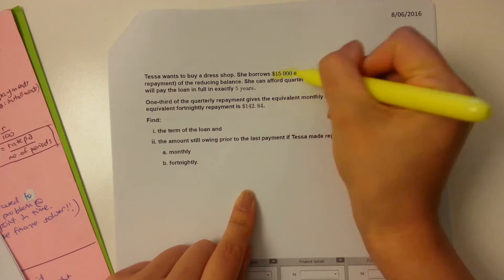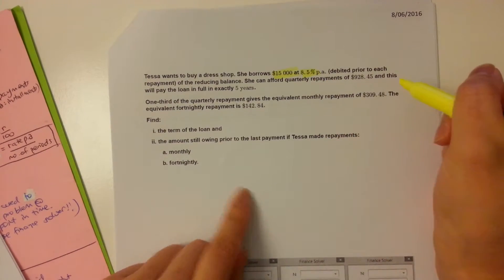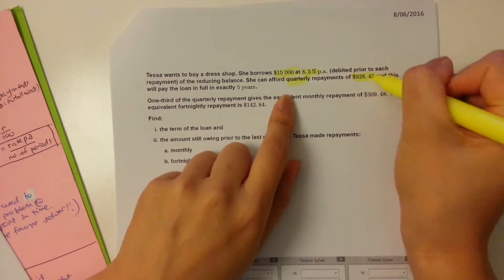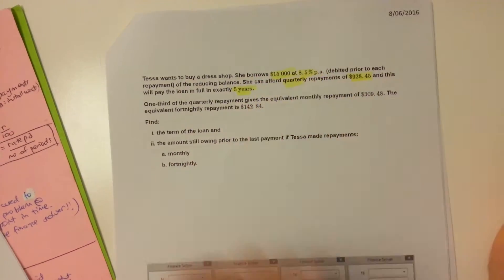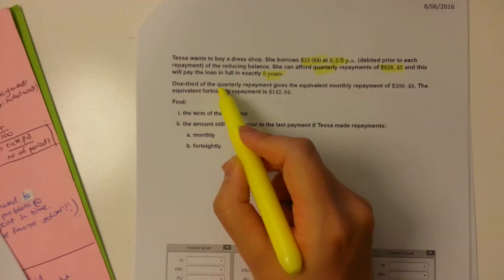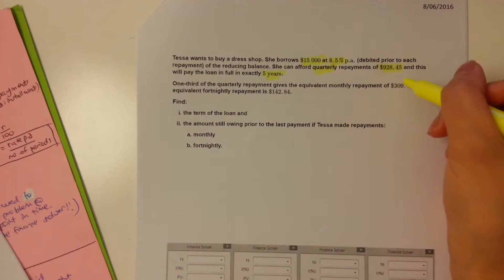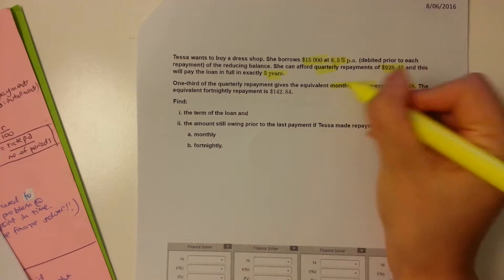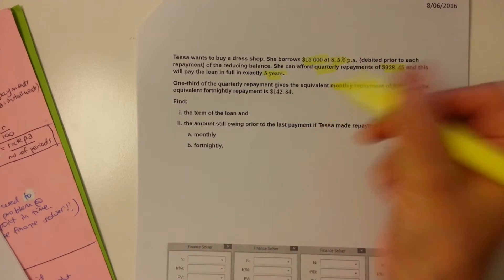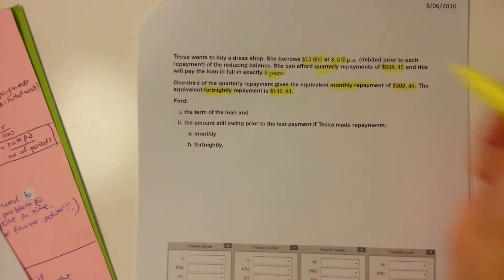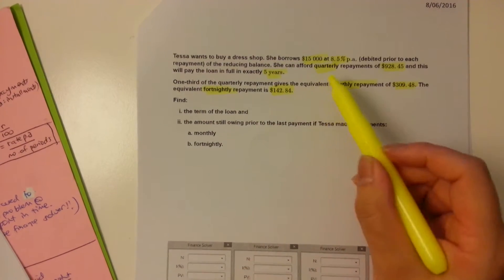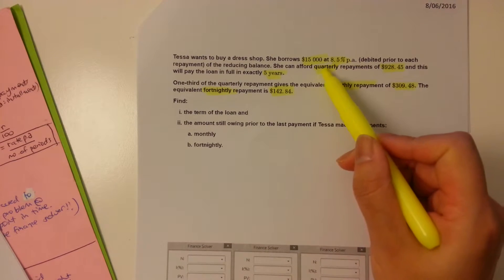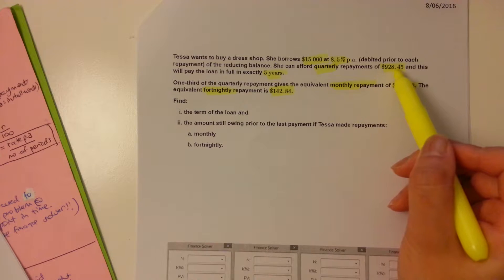she borrows $15,000 at 8.5% per annum and she can afford quarterly repayments of this value over five years. Now it says one third of the quarterly repayment gives an equivalent monthly value of this. So if she wants to pay monthly, she can pay this much or if she chooses to pay fortnightly, she can pay this value. As you can see, she can choose to pay once every three months, so quarterly, for about $900 and something.